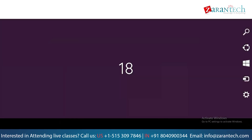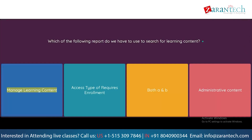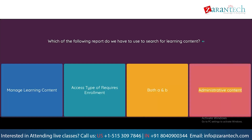Question: Which of the following reports do we have to use to search for learning content? Option 1: Manage Learning Content. Option 2: Access type of Requires Enrollment. Option 3: Both A and B. Option 4: Administrative Content.